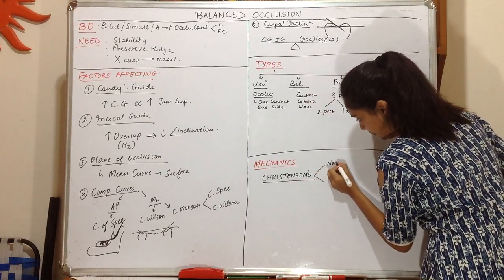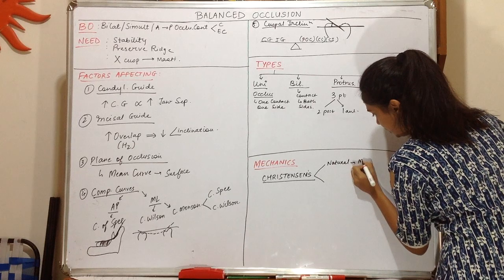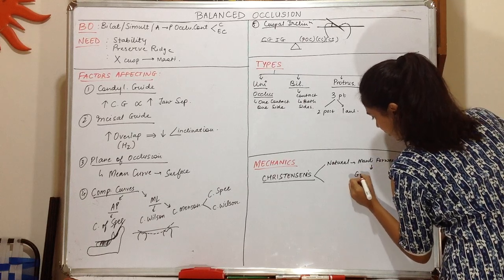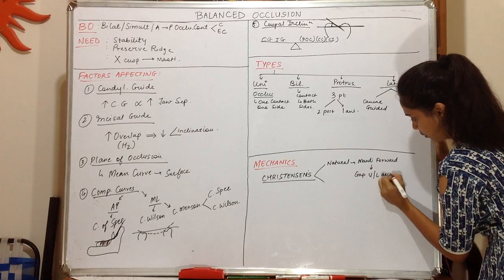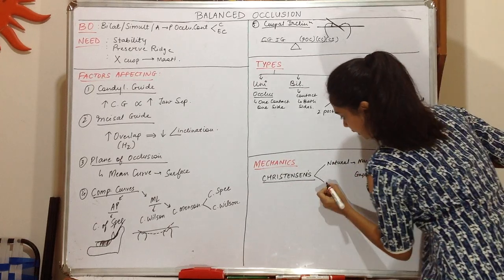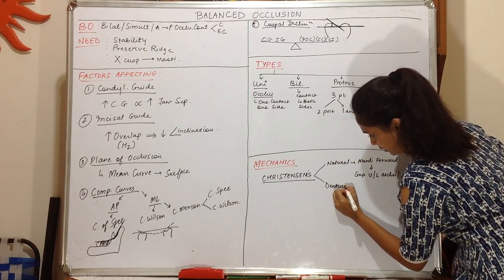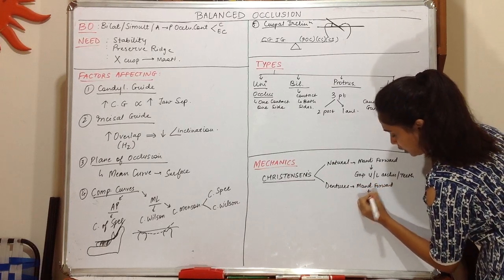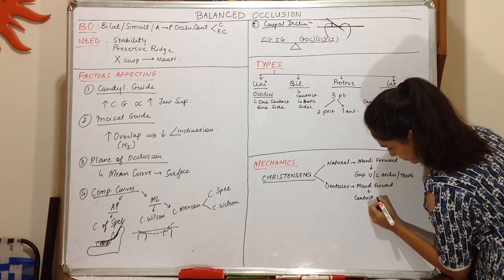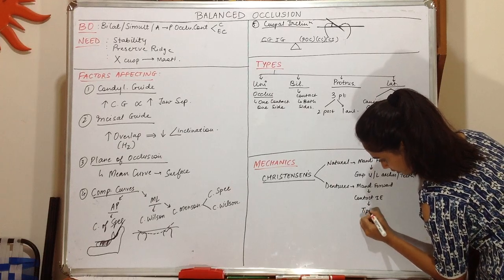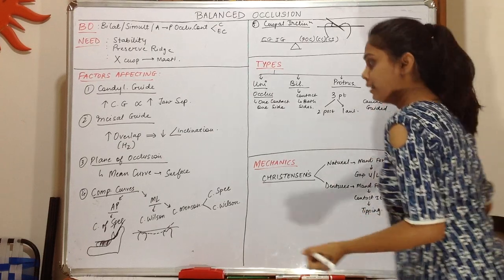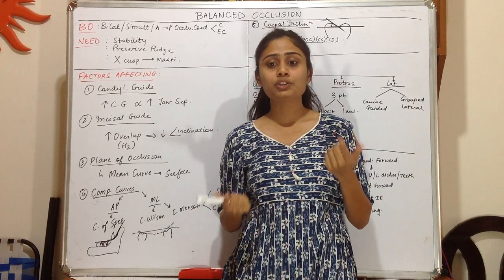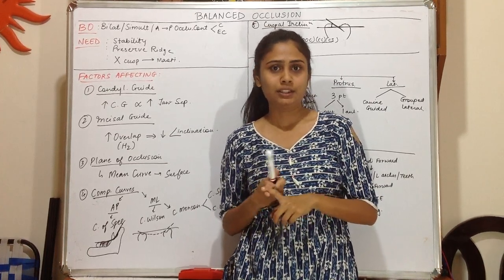So in natural dentition, when the mandible moves forward it creates a gap between the upper and lower arches, but in dentures when the mandible moves forward it contacts only the anterior incisal edges, which causes tipping. These are just some key topics from this chapter on balanced occlusion. You can also check your textbooks for more on the concepts and theories of balanced occlusion. Thanks for watching.